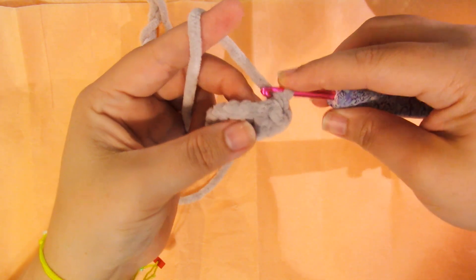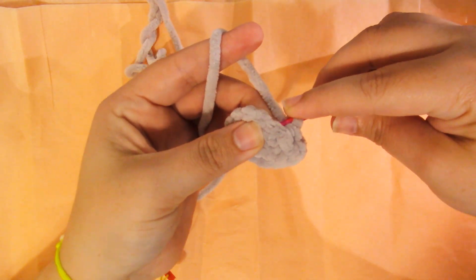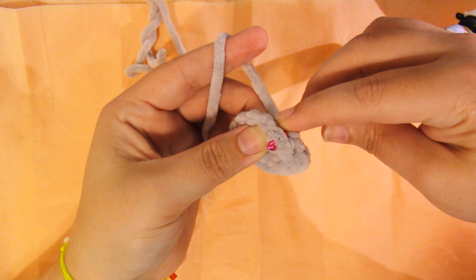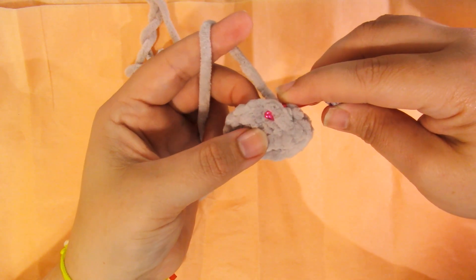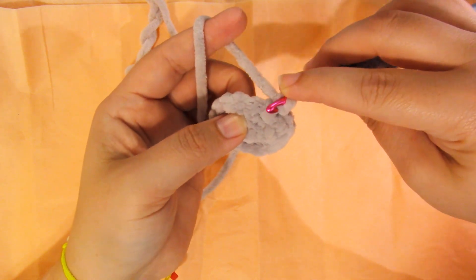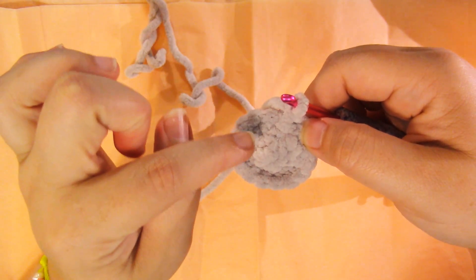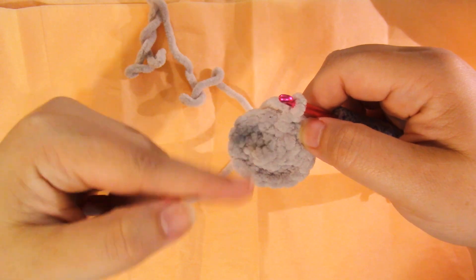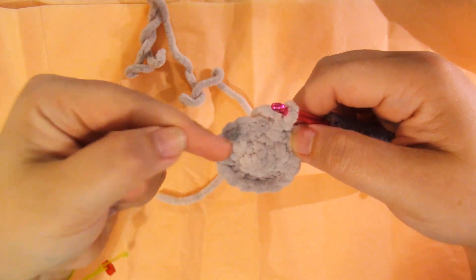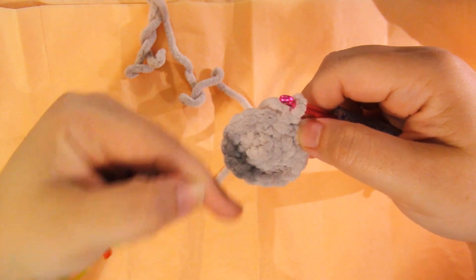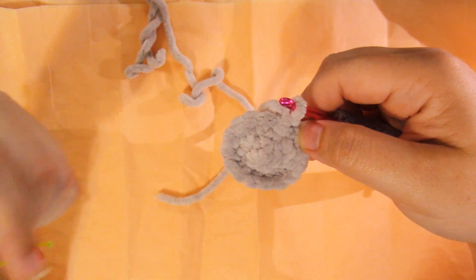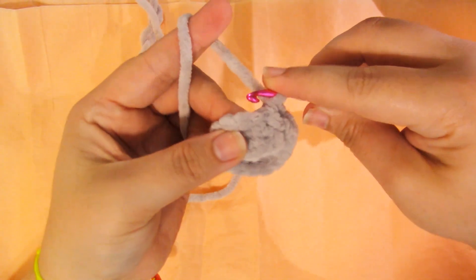One more time through that next stitch. You're going through each of the posts. Don't worry if it's like 'oh, but we just went through that space'—yes, but we're not counting those spaces. We are going around each of the posts that were made in round three.